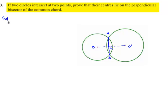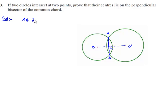We have considered two circles with centers O and O', and AB is a common chord for both circles. We need to prove that the line joining the centers, OO', is the perpendicular bisector of AB, or equivalently, AB is the perpendicular bisector of OO'.